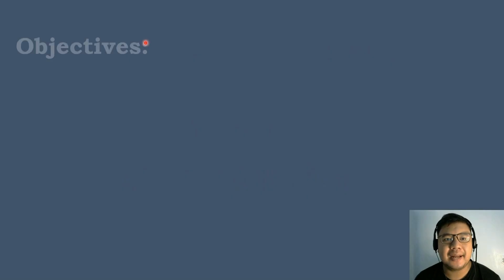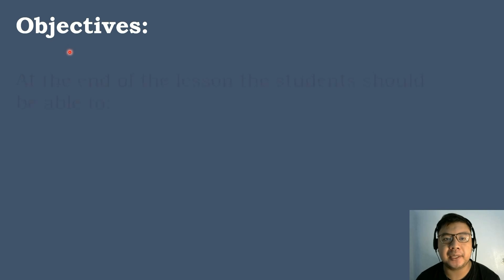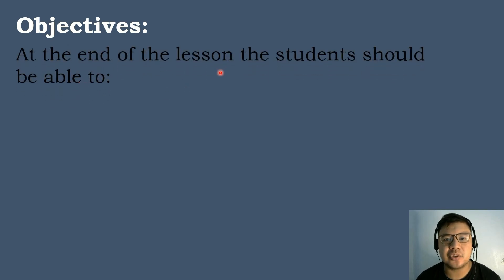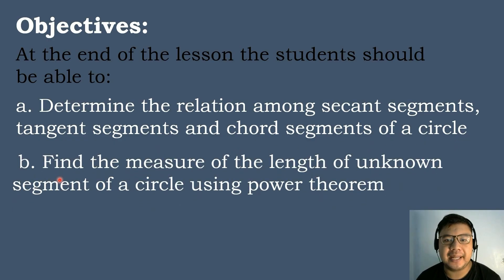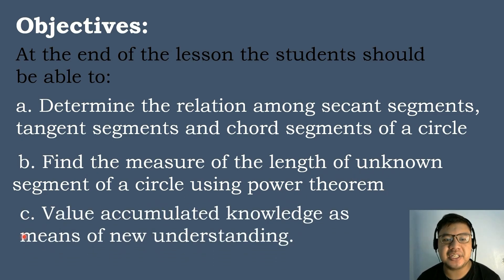Let's have the following objectives in today's topic. At the end of the lesson, the students should be able to: Letter A, determine the relation among secant segments, tangent segments, and chord segments of a circle; Letter B, find the measure of the length of unknown segments of a circle using the Power Theorem; and Letter C, value accumulated knowledge as a means of new understanding.